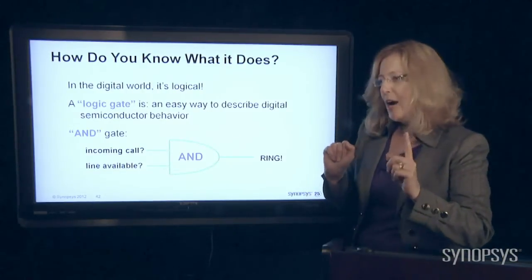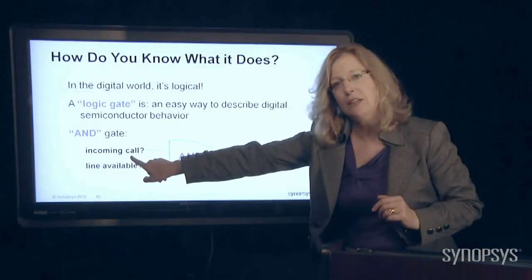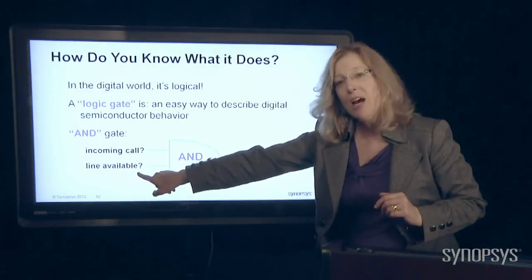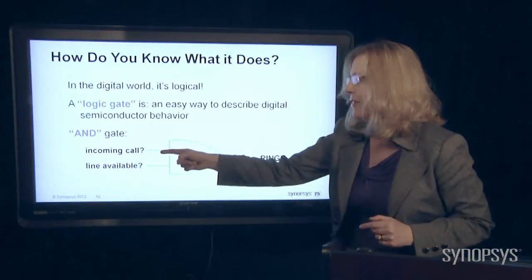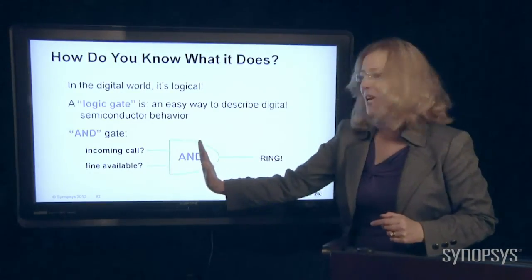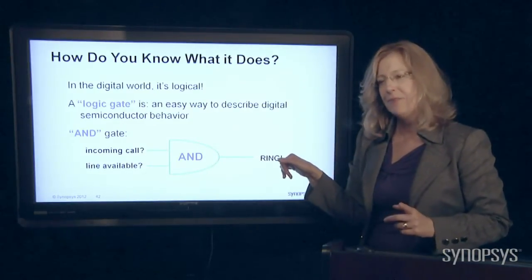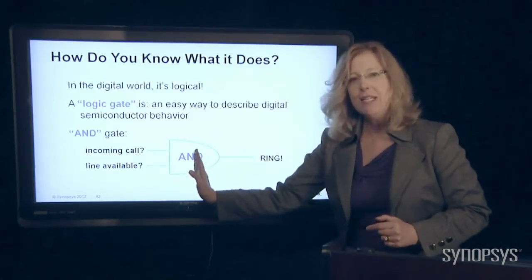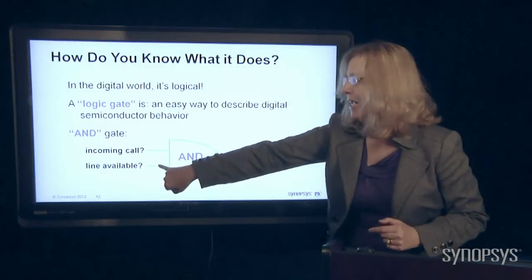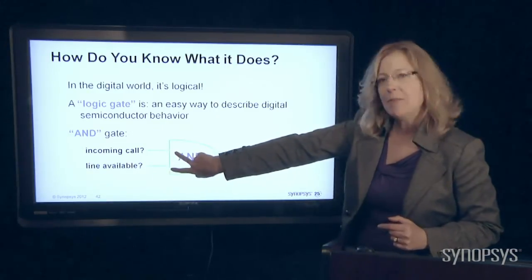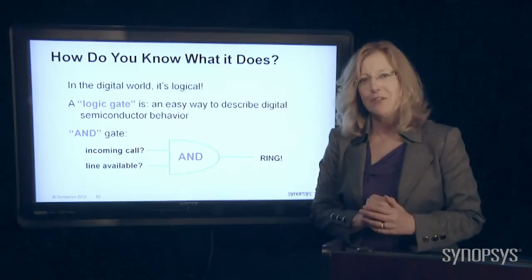So in the case where I don't have a call coming in, there's going to be no electricity here. But I do have a line available, so there will be some electricity. But because I don't have electricity on this AND on this, that gate is going to stay closed. And no electricity is going to come through the other side. So that's why we call it an AND gate. In order for the gate to open up, you have to have electricity here and here on both of these wires coming in in order to open that gate, let the electricity go through, and then come out to the other side.